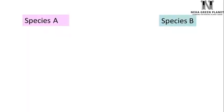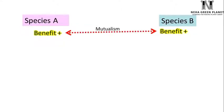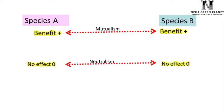Say species A is interacting with another species B. If species A is getting benefited and species B is also benefited, then the interaction is known as mutualism. Now consider another interaction in which species A is unaffected and the same is the case with species B. If both species are unaffected, then the interaction is known as neutralism.